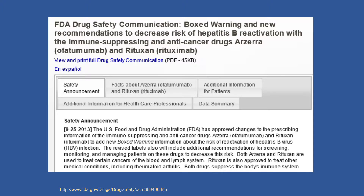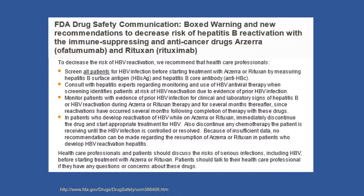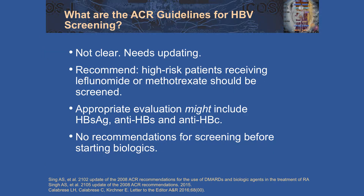This is the updated black box warning to rituximab that was added in 2013, warning of the risk of hepatitis B reactivation. It had previously been mentioned in the warning and precaution portion of the label, but increased cases led the FDA to re-evaluate the risk and update the label. The ACR guidelines for screening for hepatitis B are not exactly clear — they need updating, are based largely on expert consensus, and recommend high-risk patients receiving leflunomide or methotrexate be screened. They ask us to stratify risk, which is tricky. Appropriate evaluation might include hep B surface antigen, surface antibody, and core antibody, but they don't give us a specific algorithm and don't tell us exactly how to screen. They are long overdue for an update.